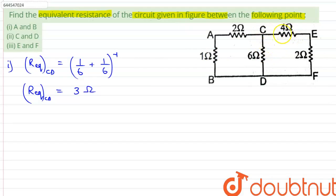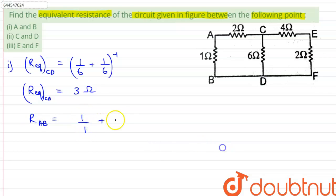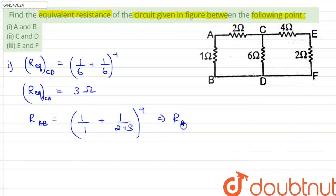Therefore, we can write that the equivalent resistance across point CD is three ohms, with respect to points E and F. As you can see, they are in series with the two-ohm resistance. Therefore, R_ab equals one over (one plus one over (two plus three)), whole inverse, which gives R_ab equals five divided by six ohms.